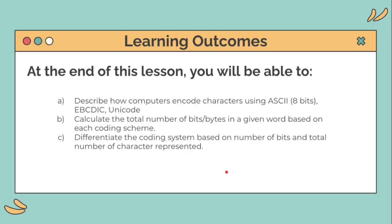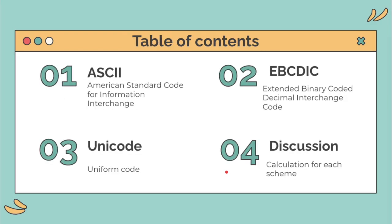You'll also be able to differentiate the coding systems based on number of bits and total number of characters represented. The contents covered are: ASCII, which stands for American Standard Code for Information Interchange; EBCDIC, which stands for Extended Binary Coded Decimal Interchange Code; Unicode, which stands for Uniform Code; and a discussion including calculations for each scheme.